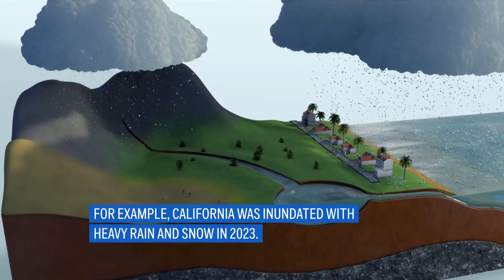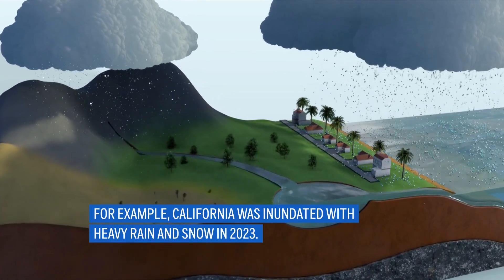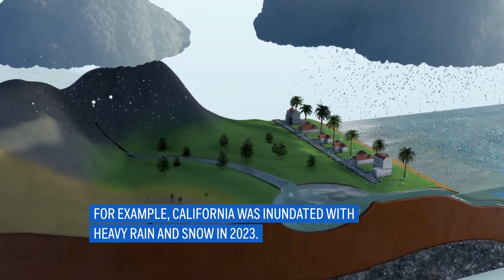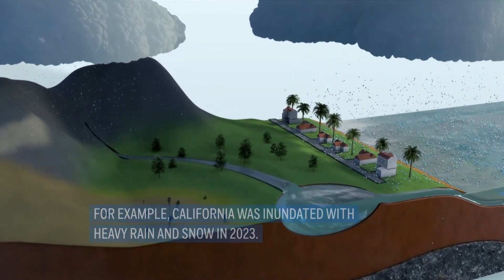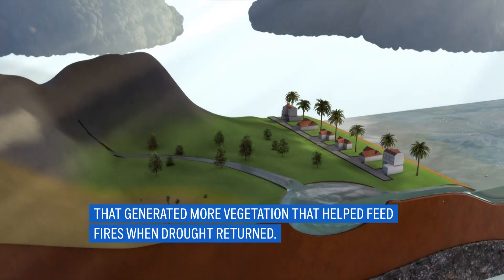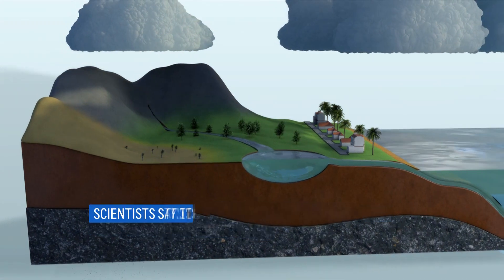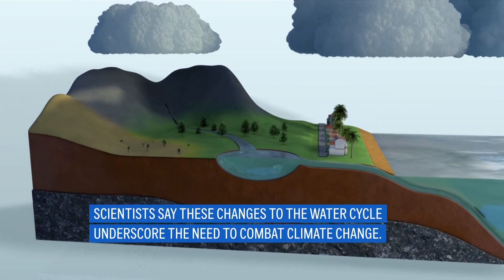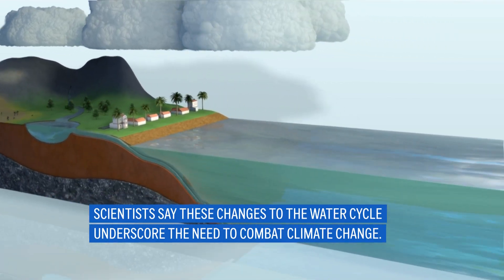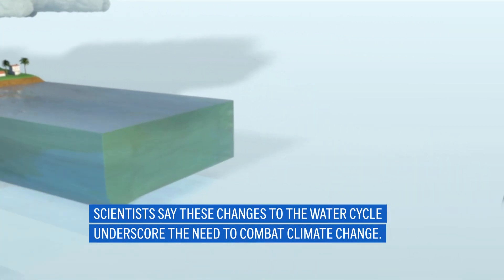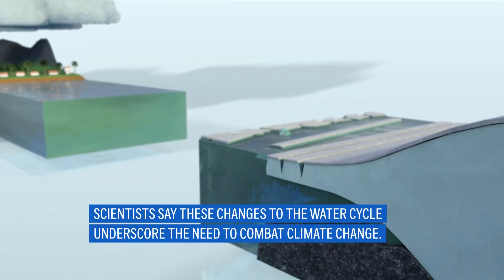For example, California was inundated with heavy rain and snow in 2023. That generated more vegetation that helped feed fires when drought returned. Scientists say these changes to the water cycle underscore a need to combat climate change.